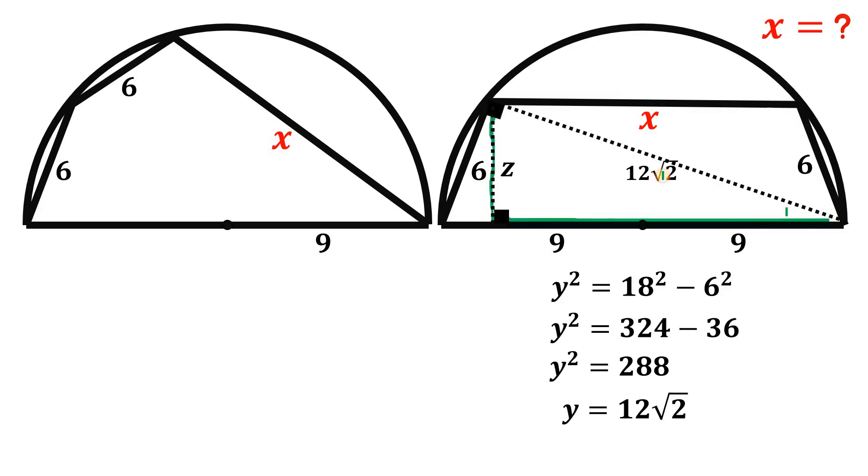So one is this small right triangle, and the other right triangle is this big right triangle with the hypotenuse as the diameter of this circle. So using the similarity of these two right triangles, we can say that z, or this length, over the hypotenuse 12 times root 2, is equivalent to the smaller leg 6 over the hypotenuse 18.